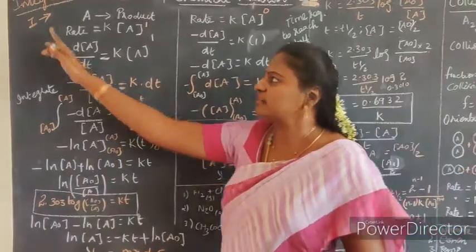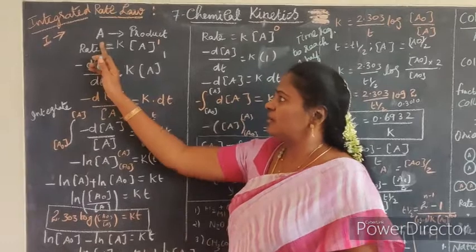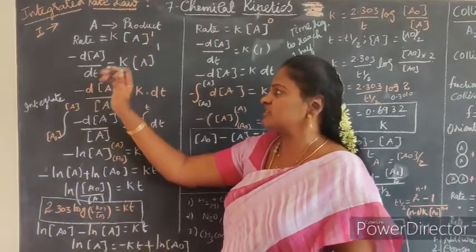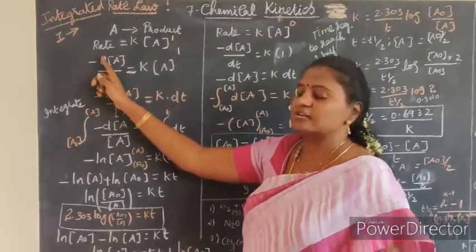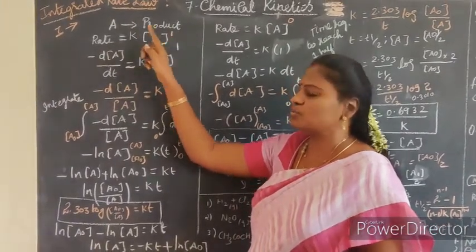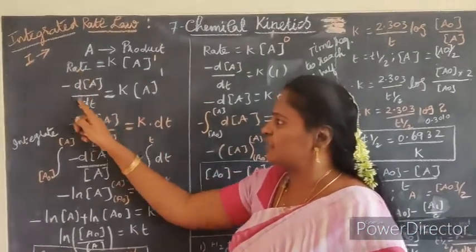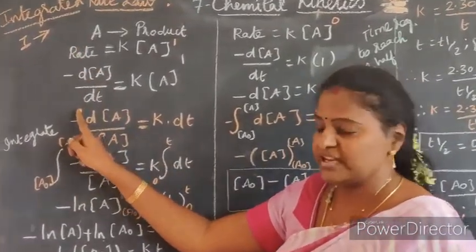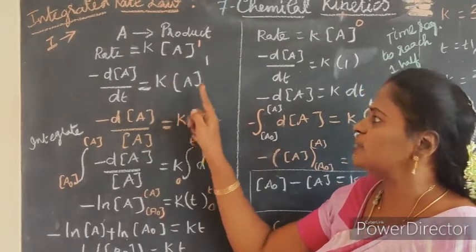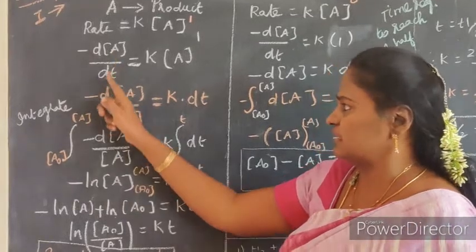This is the integrated rate law for the first order rate constant. We know that A gives product - it is a general reaction. For this, the rate of the reaction according to rate law is K into A to the power 1. N is 1 here since it is a first order reaction. So minus dA/dt is called the rate. Minus dA/dt is nothing but K into A to the power 1. Now I am going to integrate this equation.